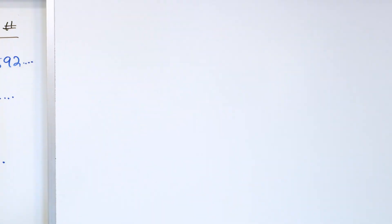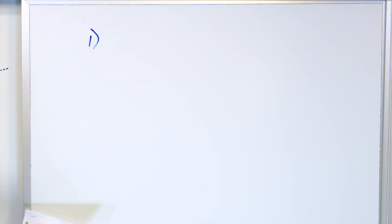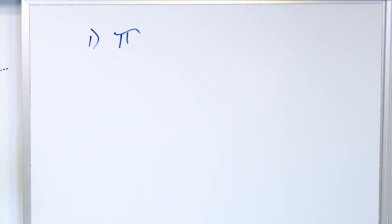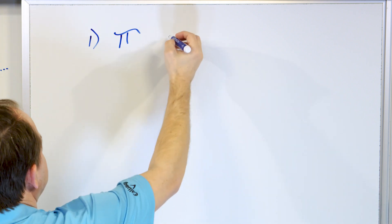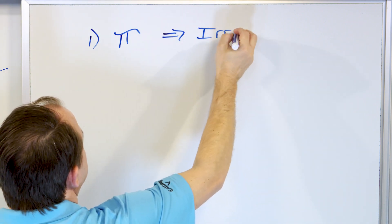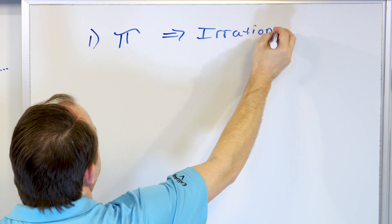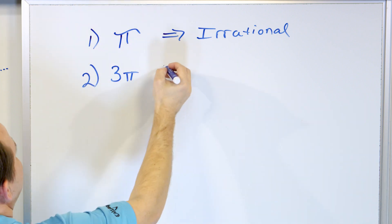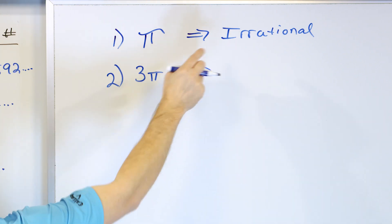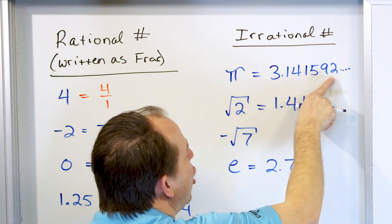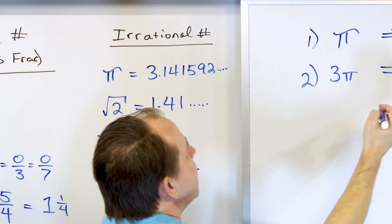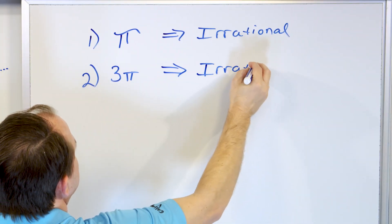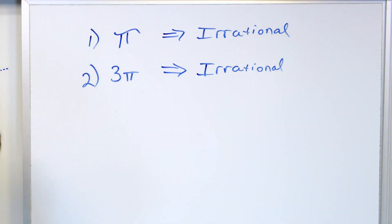So let's start off by asking: are the following numbers irrational or not? What about the number pi — is it rational or irrational? We just told you it's an irrational number. And what about 3 times pi? If pi is irrational and we multiply it by 3, all of the decimals will be different but there'll still be no pattern. It's also irrational. Anything involving pi is always going to be irrational.